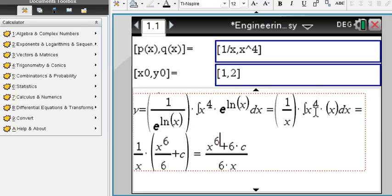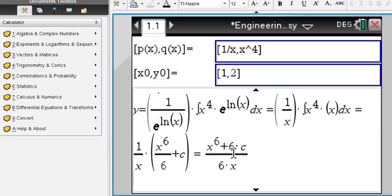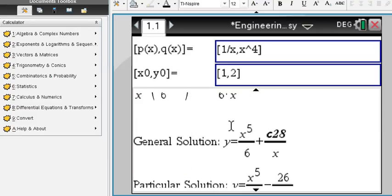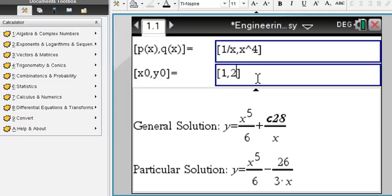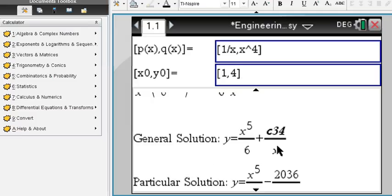You then integrate your integrand, and arrive at the general solution right here, and then again, once you use or solve for y, here is your general solution, and then once you enter the initial values, you get your particular solution right here. And of course you change things around up here, you immediately get the correct particular solution and general solution as well.